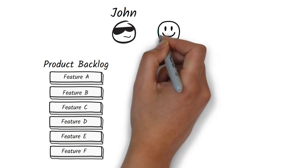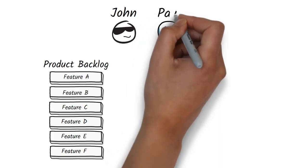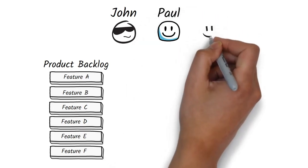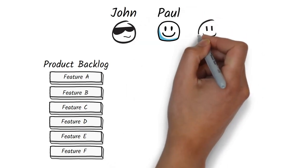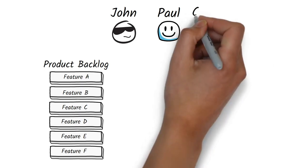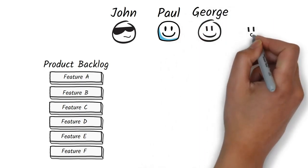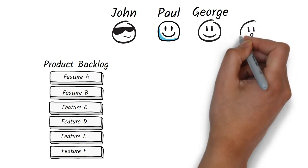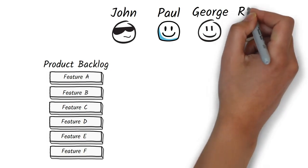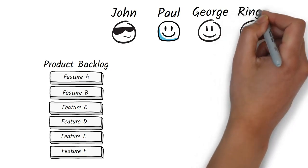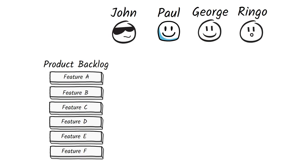You could assign a different importance weighting to each stakeholder based on how important they are to the product. But to keep things simple in our example, we're going to assume that our four stakeholders — John, Paul, George, and Ringo — all have an equal weighting. I'll come back to how to handle stakeholders with unequal weightings a little bit later.